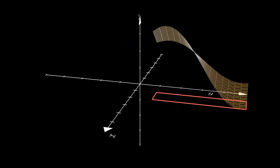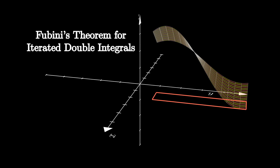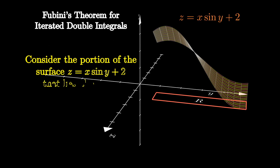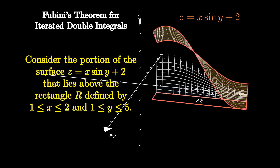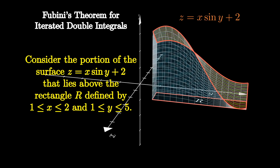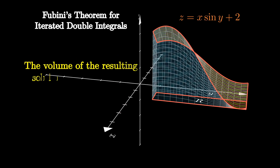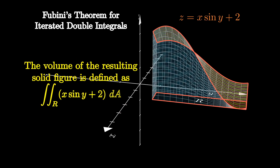In this video, we'll illustrate Fubini's theorem for iterated double integrals. Consider the portion of the surface Z equals X times sine of Y plus 2 that lies above the rectangle R, defined by letting X vary from 1 to 2 and Y from 1 to 5. The volume of the resulting solid is defined as the double integral over R of our surface expression dA. But how do you actually compute that?